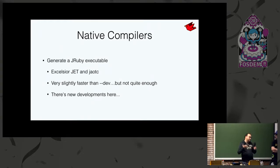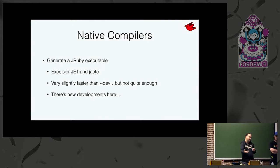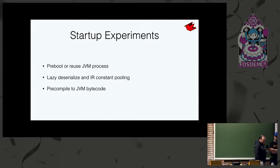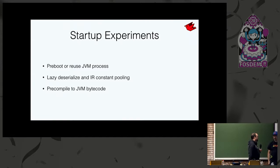In the past we also played with native compilers. Excelsior JET was one I had experience with — it got better startup with --dev, but we didn't really want to go that extra step: it's something else to support, and then the company folded. We'll talk about native compilers more later.